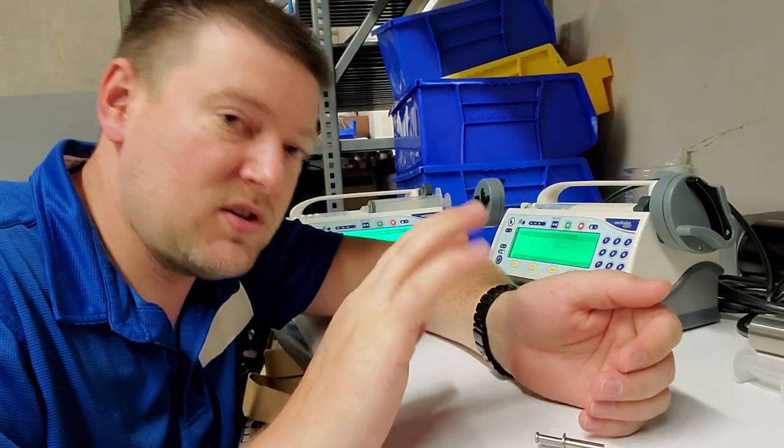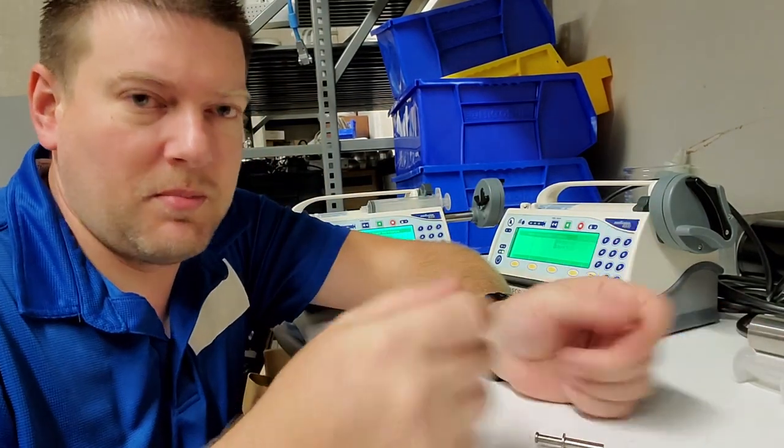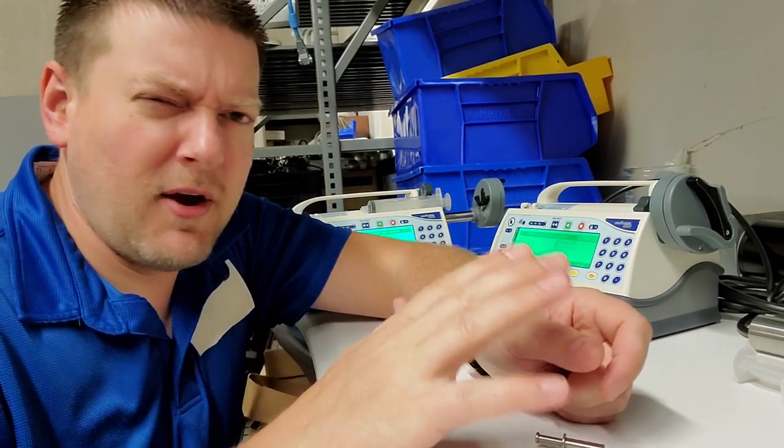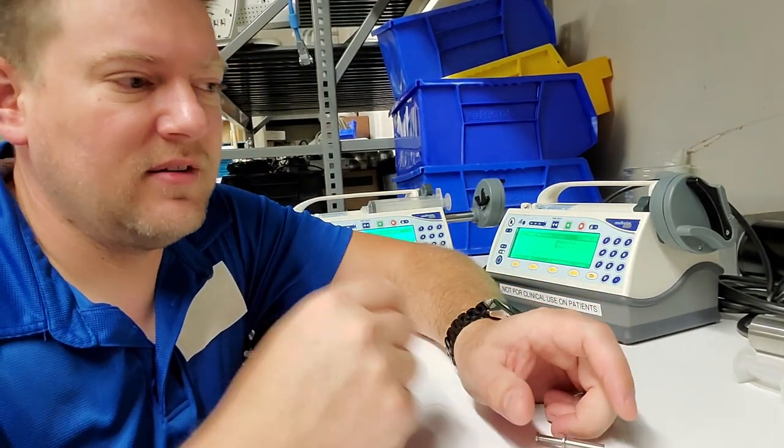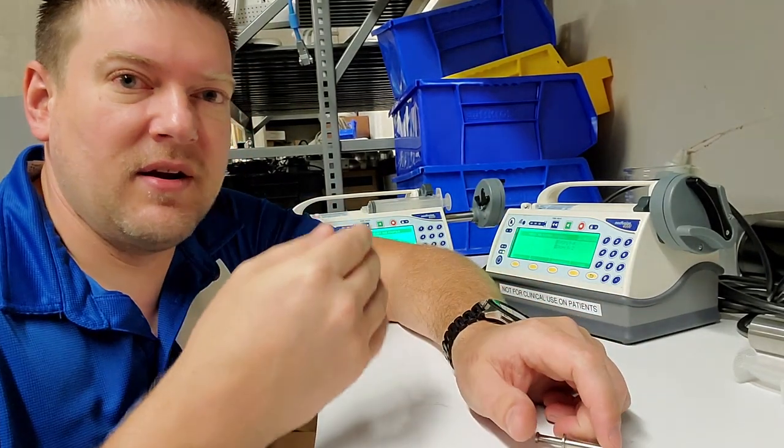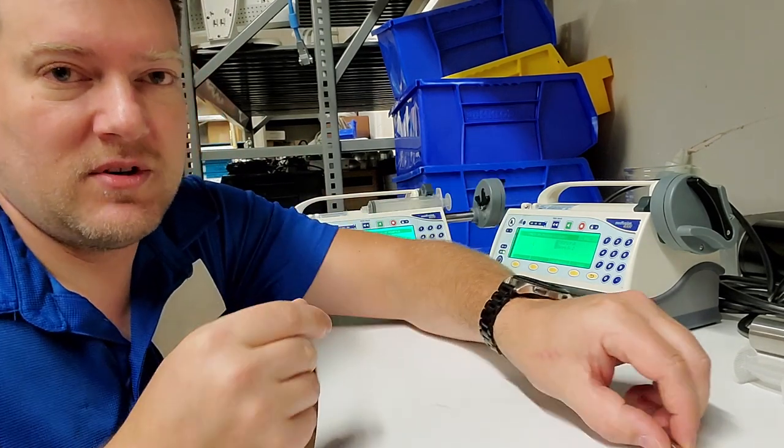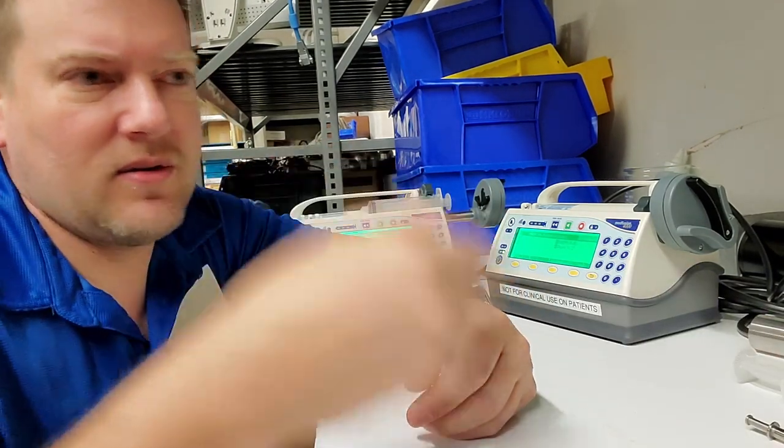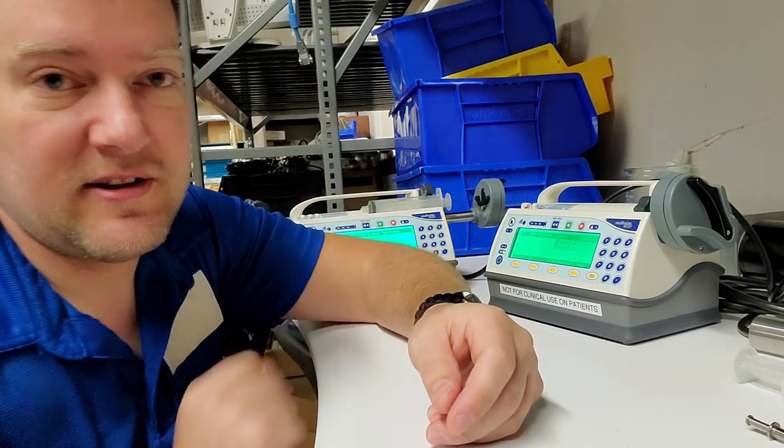The bolus is the initial surge of drug - basically a preload of drug into the system. From there it gives you maintenance drips, which is a continued set value, whatever you set the value at.